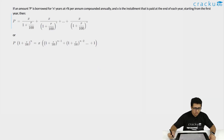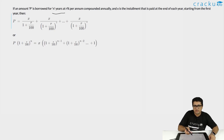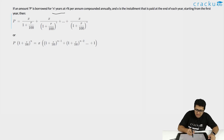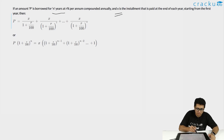Let's look at the formula. If an amount P is borrowed for n years — basically any n time periods — while calculating EMI we take it as months, so it'll be 12n time periods. At r percent per annum compounded annually, and x is the installment paid at the end of each year starting from the first year, then: P = x/(1+r/100) + x/(1+r/100)² and it goes on till x/(1+r/100)^n.